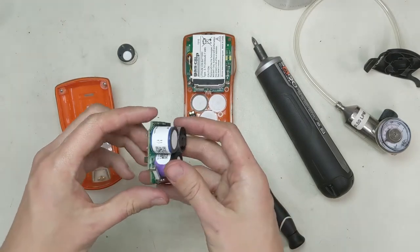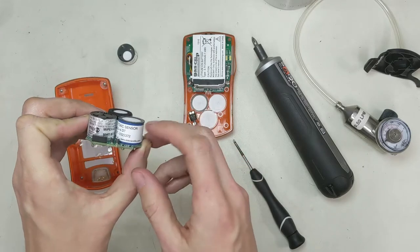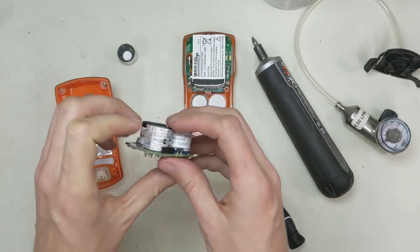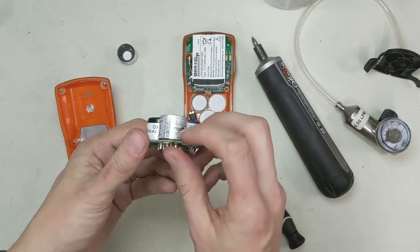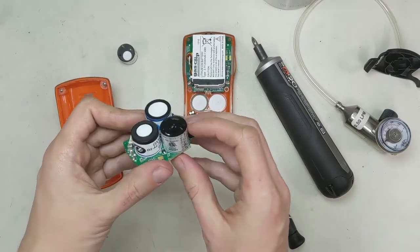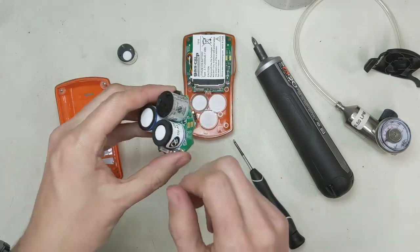Alright, here's our sensors here. So this right here is our COSH sensor. So this has a CO and an H2S on it. Over here, this is the infrared sensor. This is kind of what GasClip is known for, is this infrared LEL sensor. It's a pretty cool one. And now here's our oxygen sensor that's dead.